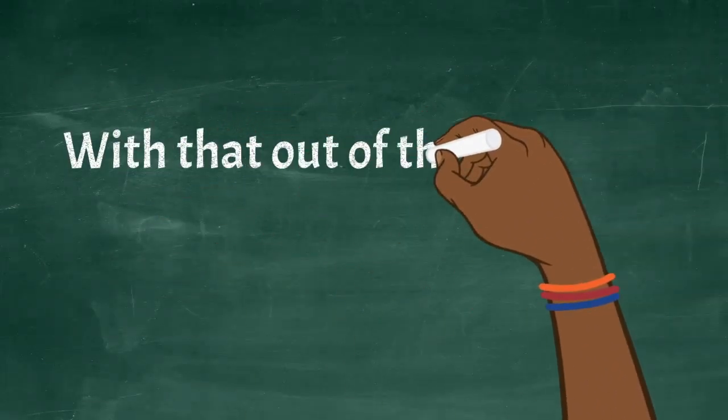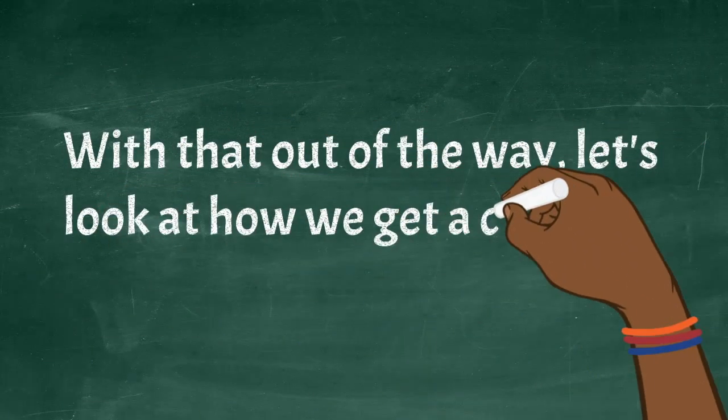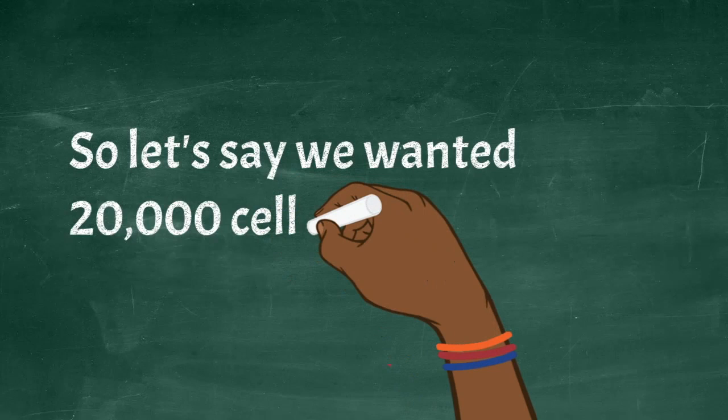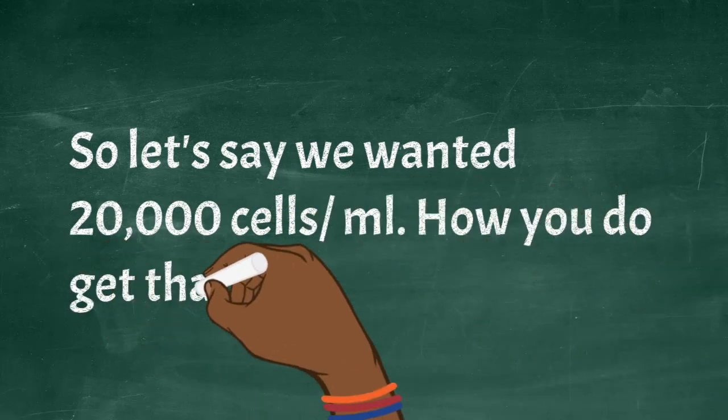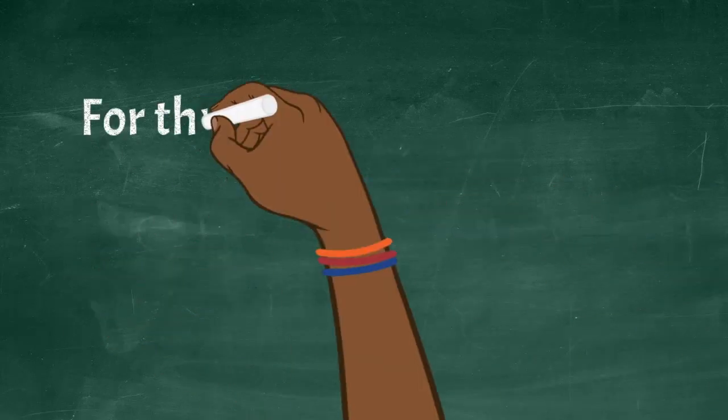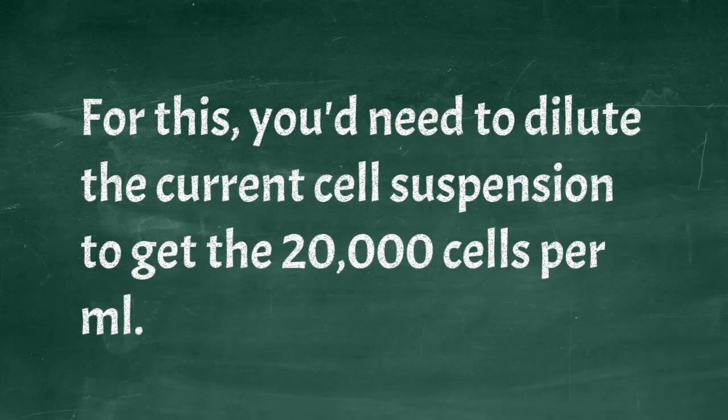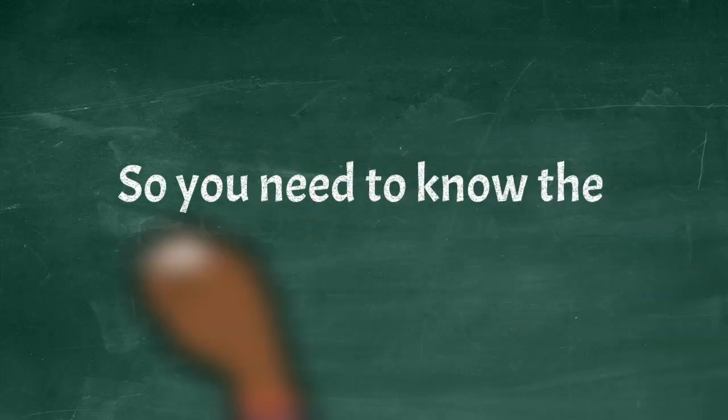With that out of the way, let's look at how we get a certain concentration of cells for cell passaging and seeding. We need to calculate the number of cells needed to seed a new culture dish or flask based on desired confluency or cell density. Let's stick to the same number but this time we want 20,000 cells per ml. For this you need to dilute the current cell suspension to get the 20,000 cells per ml.